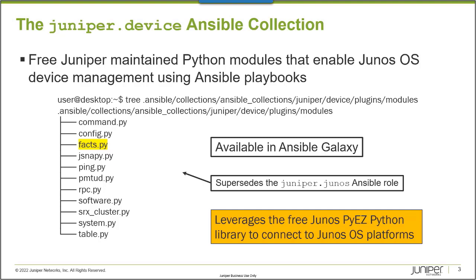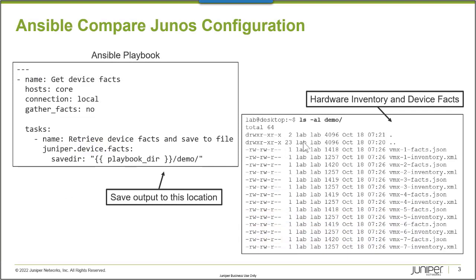In this Learning Byte, we will use the Facts Python module to retrieve facts from a group of Junos platforms. This simple Ansible playbook leverages the Juniper.Device Ansible Collection Facts Python module to retrieve facts from all of the Junos devices that are members of the core Ansible inventory group.